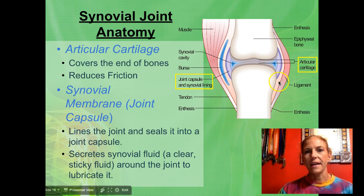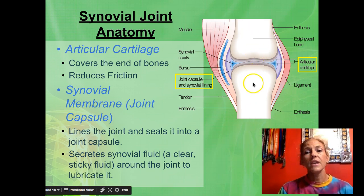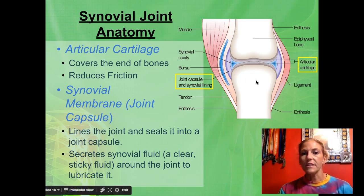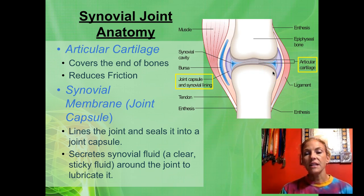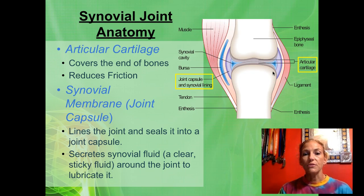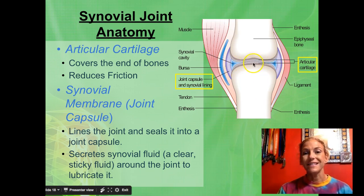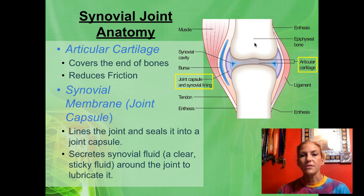First, let's look at the joint capsule. Here you have two different bones — maybe this is the femur and the tibia, or the humerus and the ulna — two bones that are articulating. The first thing that protects these bones is their articular cartilage, which is a type of hyaline cartilage. This thin layer of cartilage on top of the bones helps reduce friction and protects the bones from being worn down.